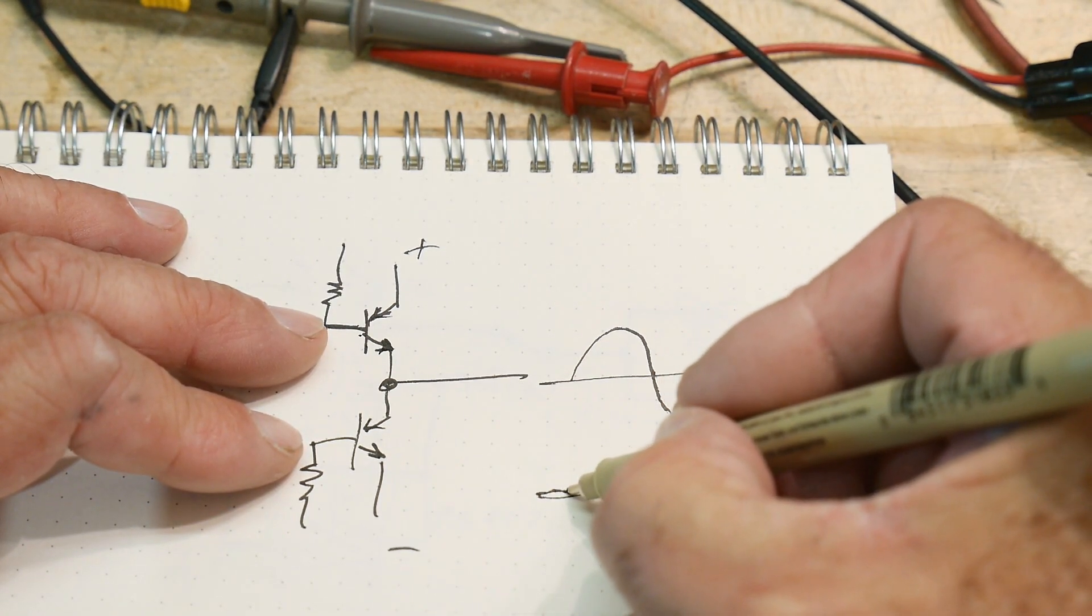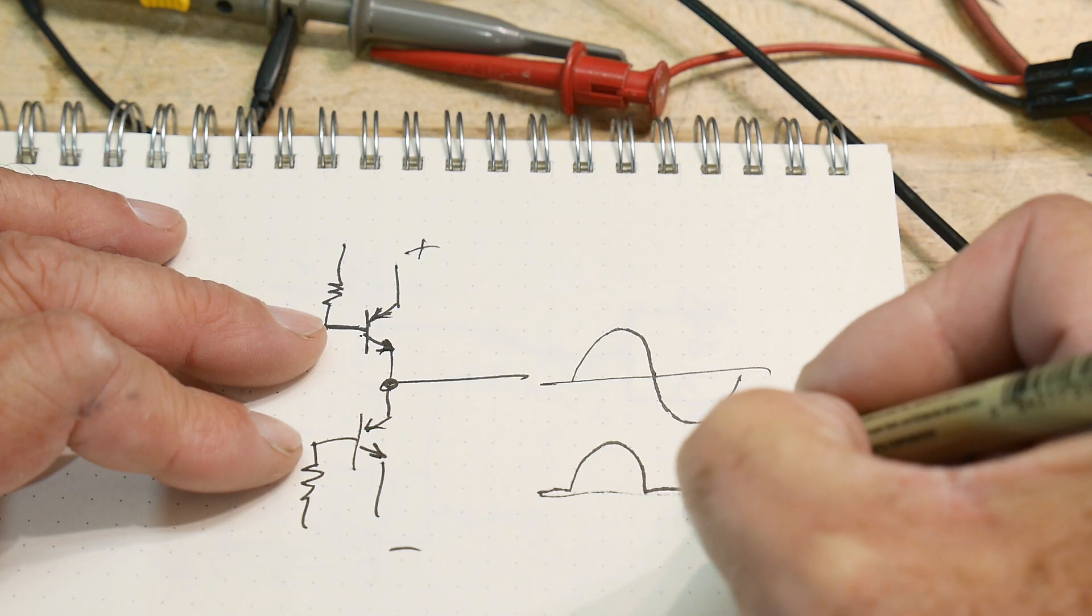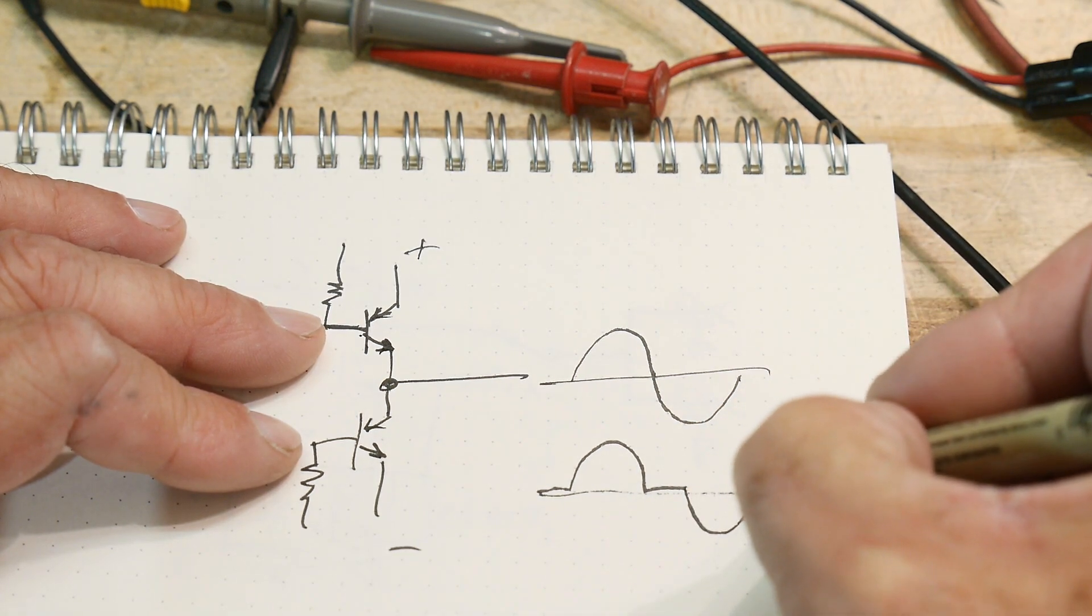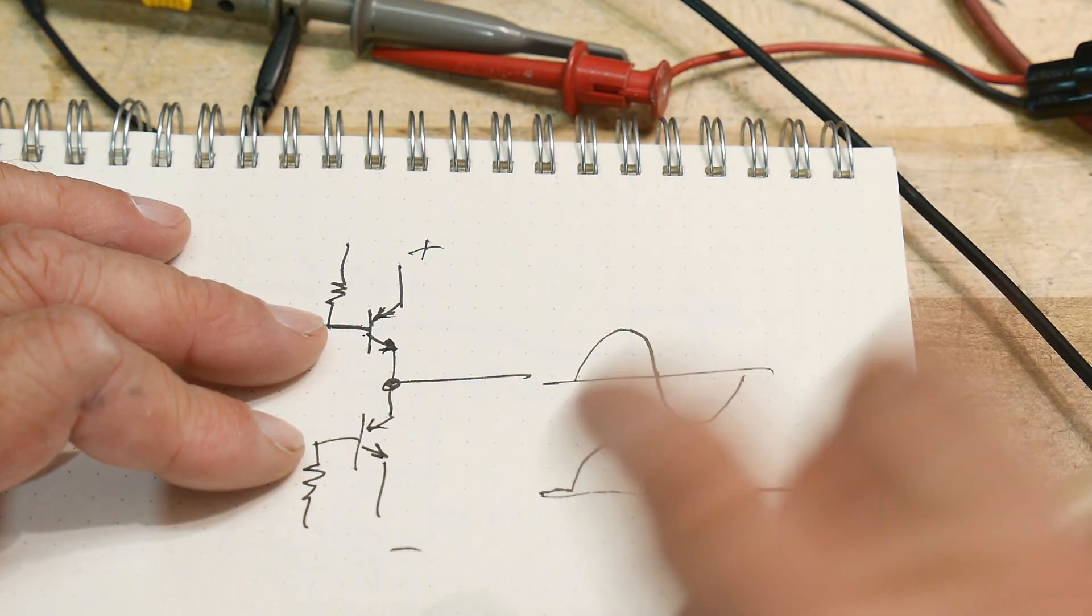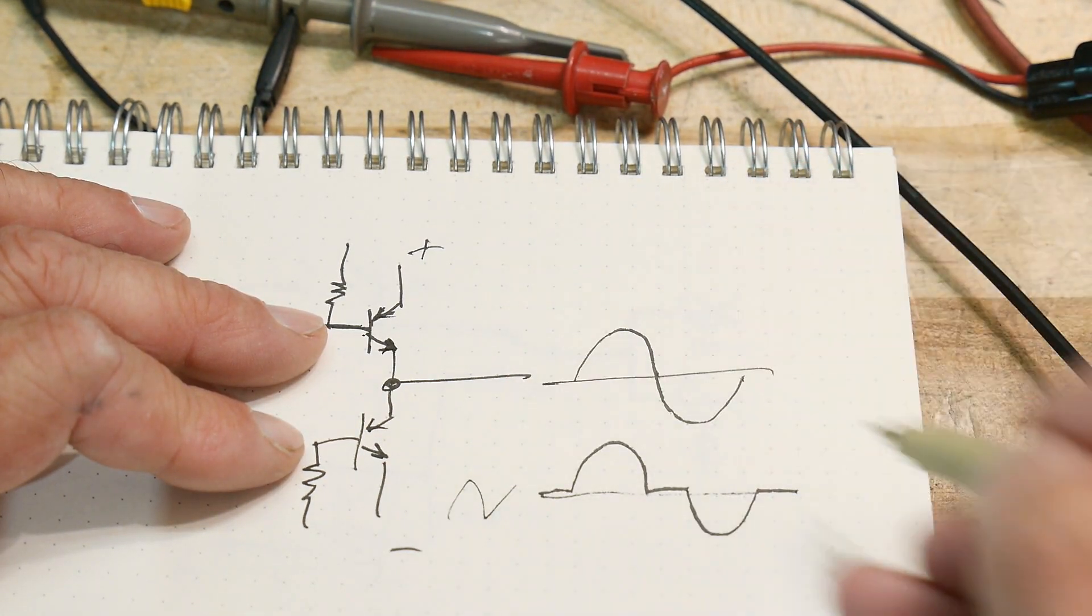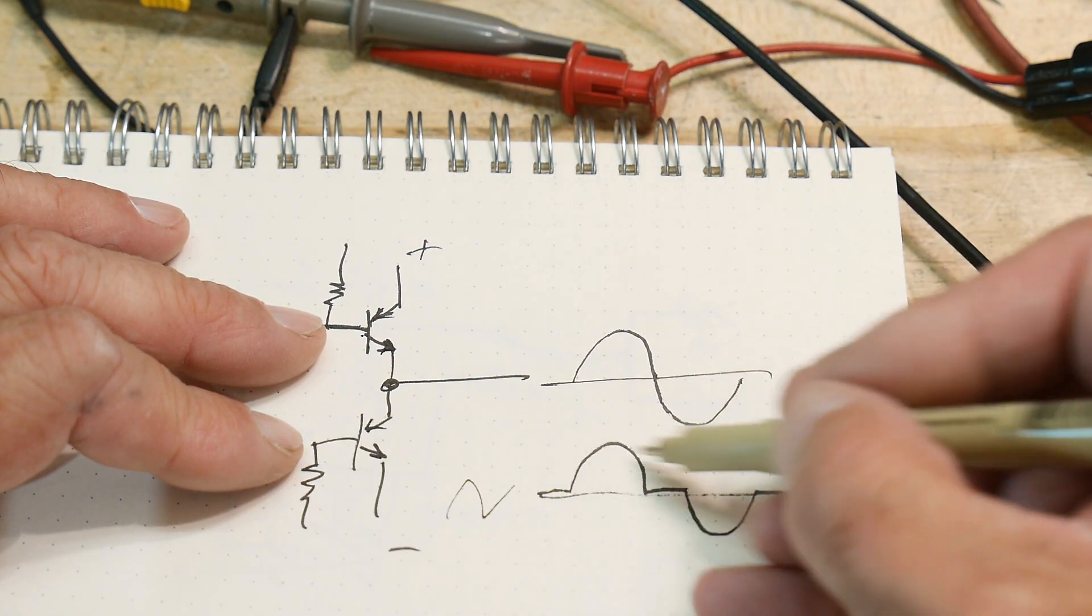So what generally happens is you get a waveform that looks like this. You get that, and then nothing happens, and then you get the bottom, and then nothing happens. And that's because the transistors aren't turning on. As the voltage input looks nice, it needs to get over that one diode drop before it starts turning on.